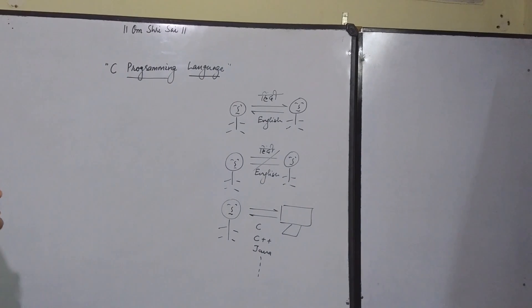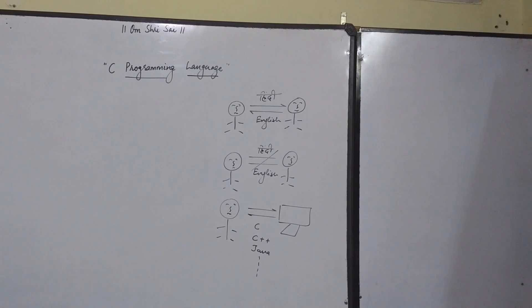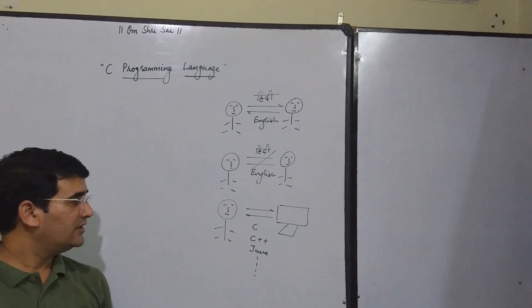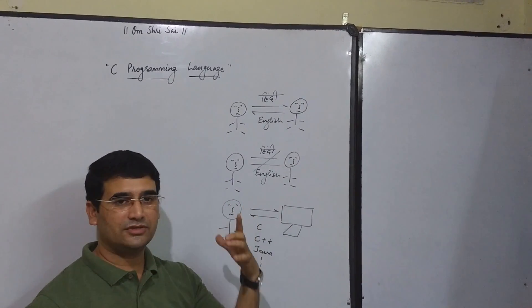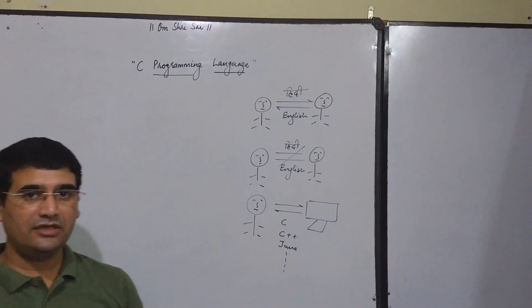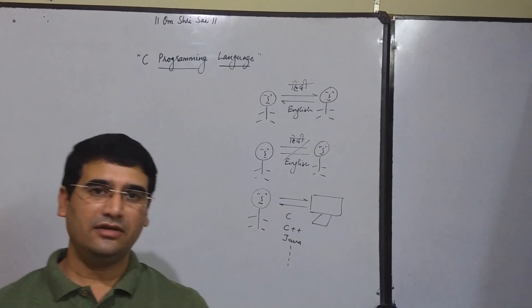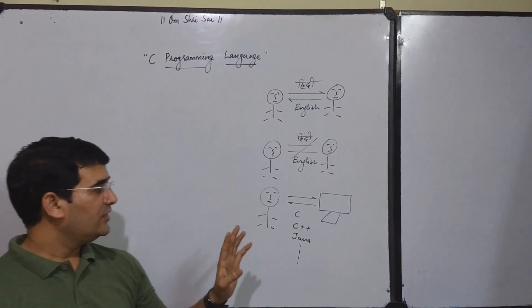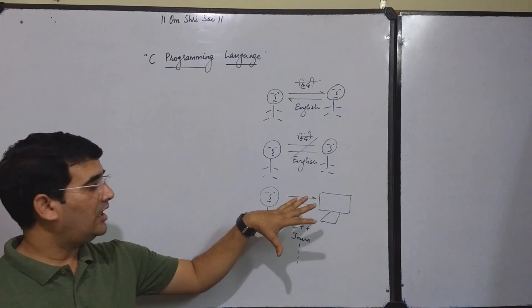Now the second aspect is programming. So, what is programming actually? Before that, we should know something about computers. What is a computer? A computer is simply a machine which follows our instructions. Whatever instruction we give to the computer, it will just follow and execute.